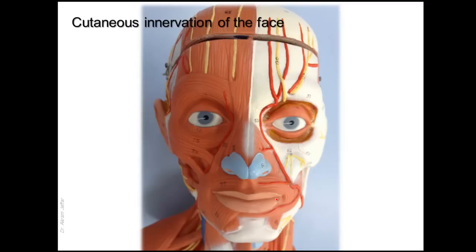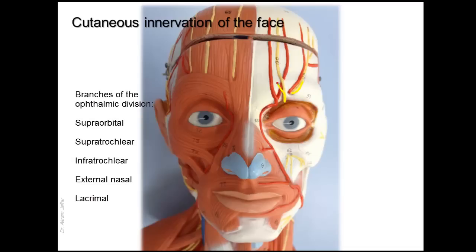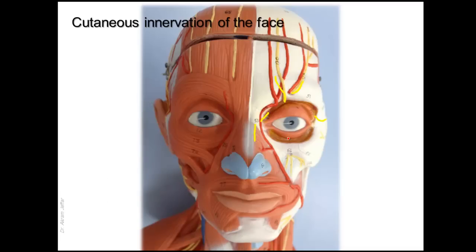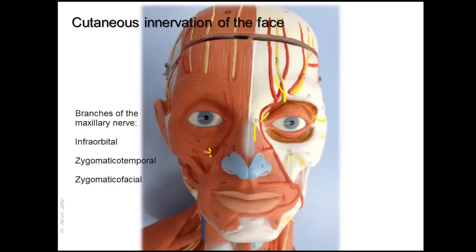The cutaneous innervation of the face is provided mainly by branches of the three divisions of the trigeminal nerve. Here we can see the supraorbital nerve and the supratrochlear nerve, which are branches of the ophthalmic division. Also we have the infratrochlear nerve, an external nasal nerve, and a lacrimal nerve — all five branches of the ophthalmic division of the trigeminal nerve.